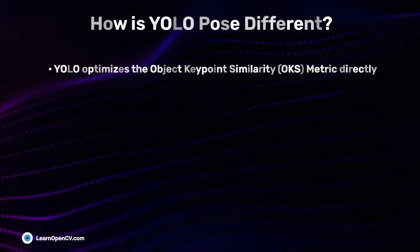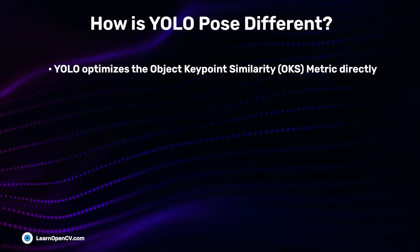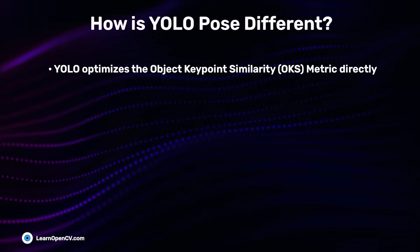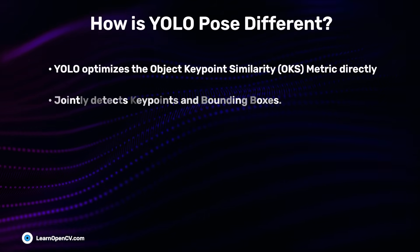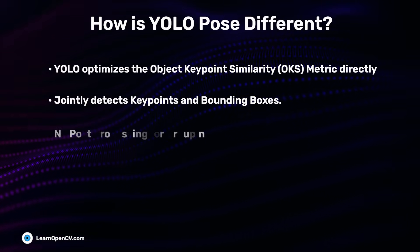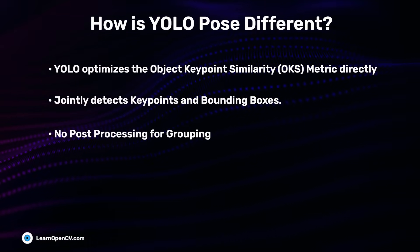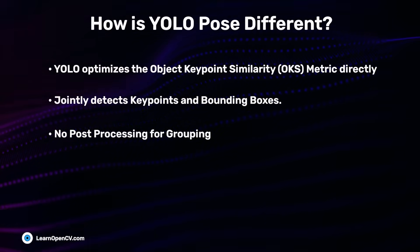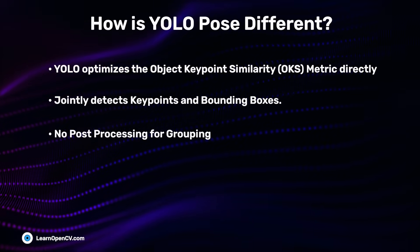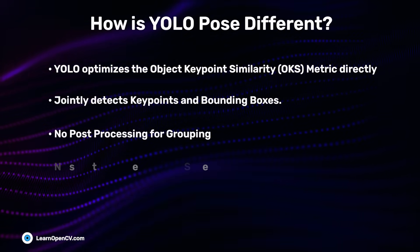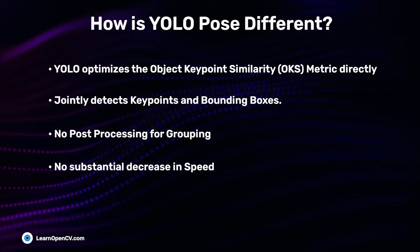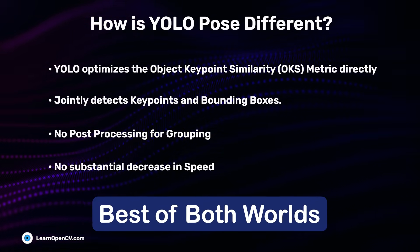YOLO Pose moves away from both approaches and directly optimizes the Object Keypoint Similarity (OKS) metric, which jointly detects keypoints and bounding boxes. It does not need a grouping step, and since keypoints and boxes are predicted in a single inference step, it does not compromise on speed — bringing the best of both approaches.